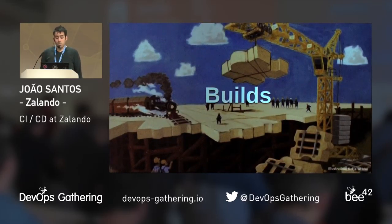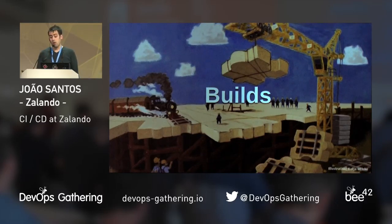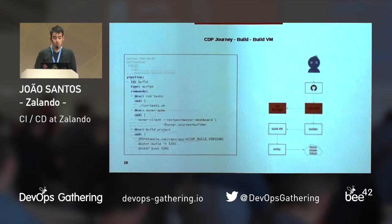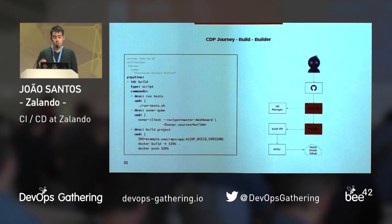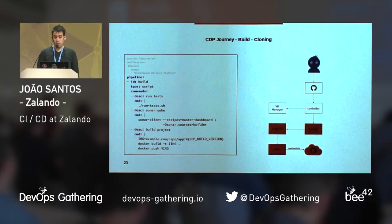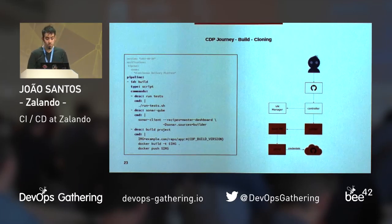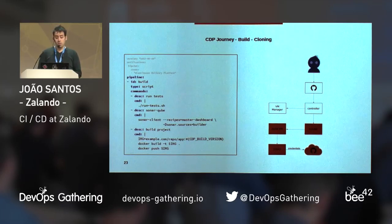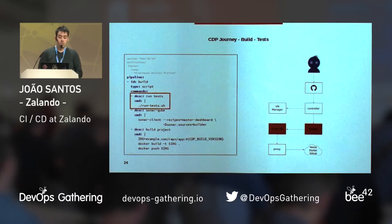The first step of a typical pipeline is the build. In builds we run tests, checks, and build and upload artifacts. To start the build, the controller asks the VM manager for a build VM, then the controller starts a builder pod and sends updates to GitHub. The builder connects to the build VM using SSH. The repository gets cloned in the build VM through the proxy — remember that build VMs don't have credentials so they cannot clone directly. The proxy, after checking with the controller that the build VM is legitimate, injects the required credentials.